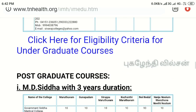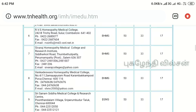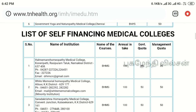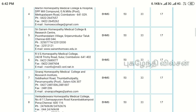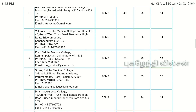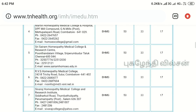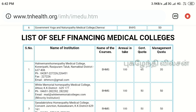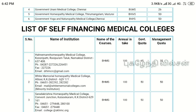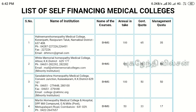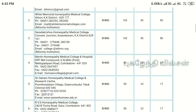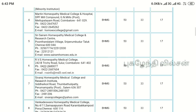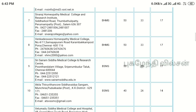Depending on the college, Government Intake Colleges and Management Quota are different. Government Quota is 65 and Management Quota is 35. For government colleges, direct and offline applications can be filled and applied for Ayurveda and Siddha courses.